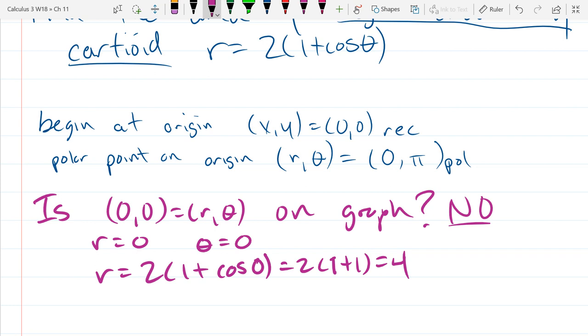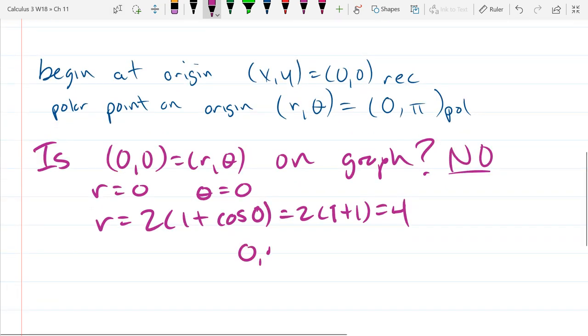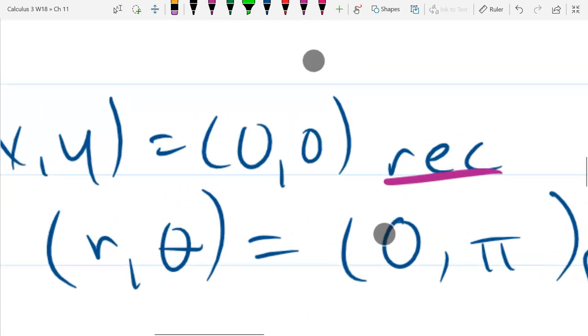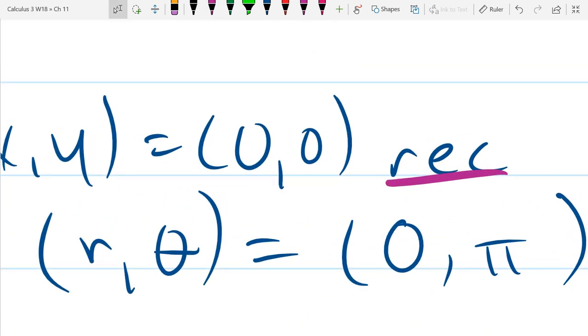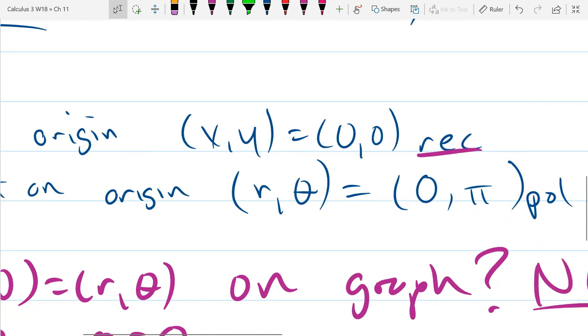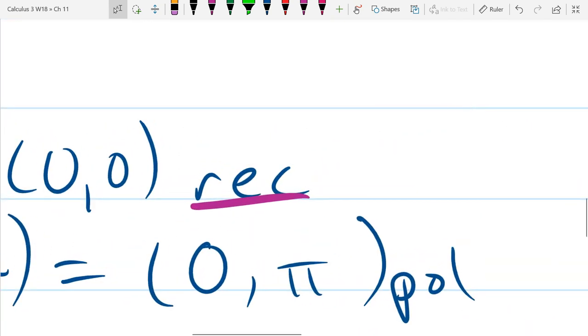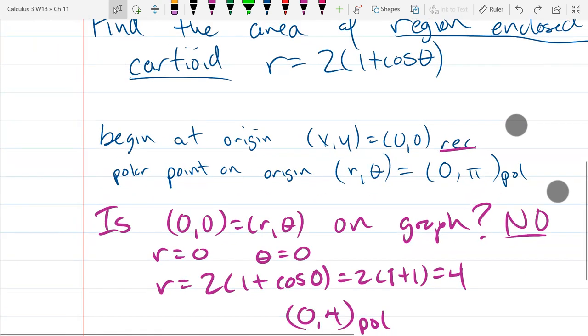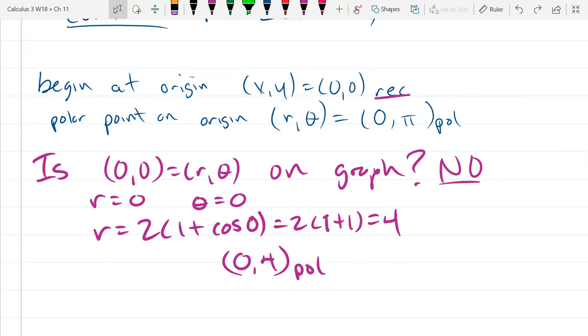When θ is 0, what do we get for r? So we've got 1 plus cos 0, which is 2 times (1 + 1), which is 4. So you want to be careful. So is this point on the graph? The answer is no, absolutely not. So you want to be very careful. Polar points are tricky, especially at the origin. So how do you, why do you say no? So I can end up in 4. So the point (0,4) is on the graph. Oh, but not (0,0). But not (0,0). Because I'm in polar coordinates, it's really important that you pay attention to what system you're in.